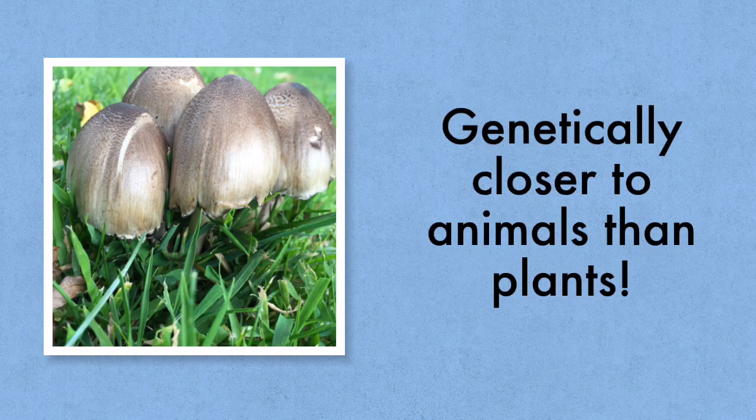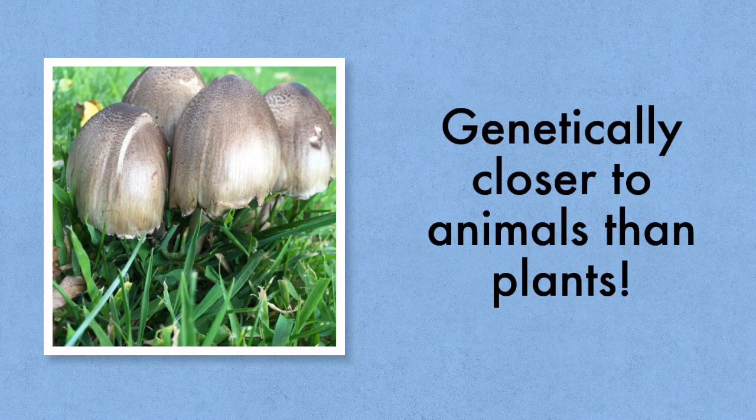They are actually more genetically closer to animals than they are to plants. All life on the planet evolved from one common ancestor and the tree of life is a diagram used to represent the branching events.